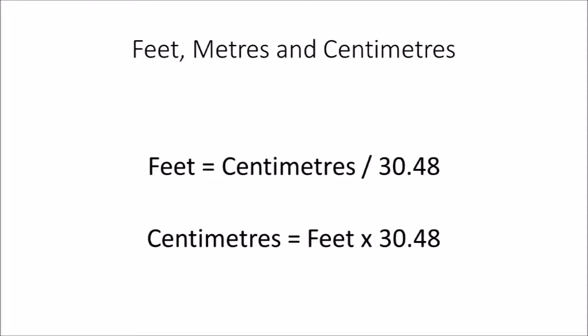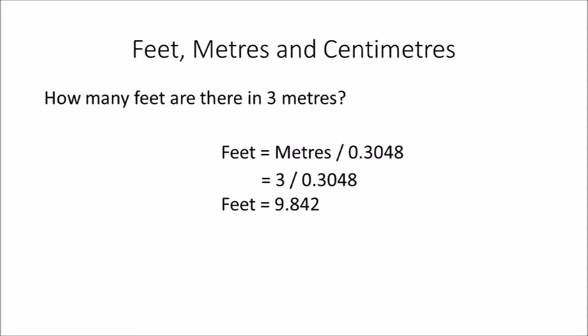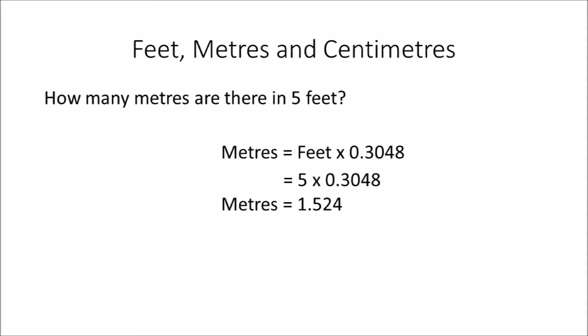Example 1: How many feet are there in 3 meters? Using the formula feet = meters ÷ 0.3048, we calculate 3 ÷ 0.3048, and the answer is 9.842 feet.